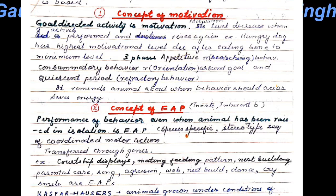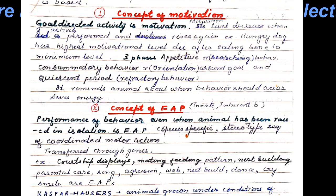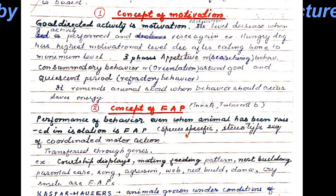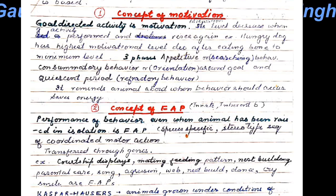The response diminishes after the consummatory phase. The third phase in the concept of motivation is the refractory period, or quiescent period — it is the period of inertia or diminished response following consummatory behavior.